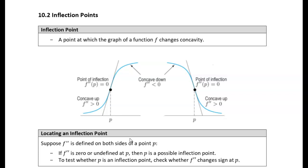Here's an example of an increasing function on the left that's changing from concave up to concave down. Down here the second derivative is greater than zero; up here the second derivative is less than zero, and at the inflection point the derivative is zero. Here's another example — a decreasing function on the right going from concave down to concave up. The place where it changes concavity is where the second derivative is zero.